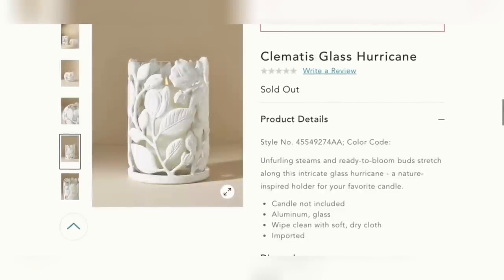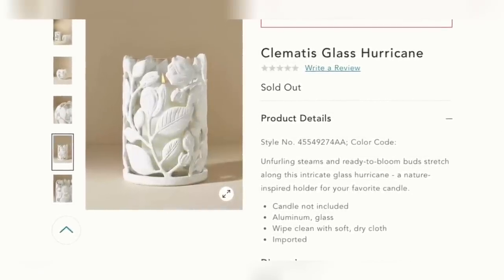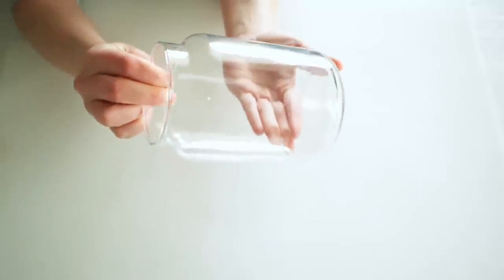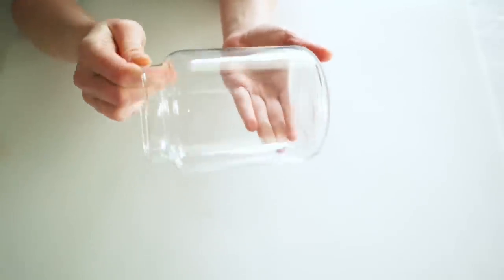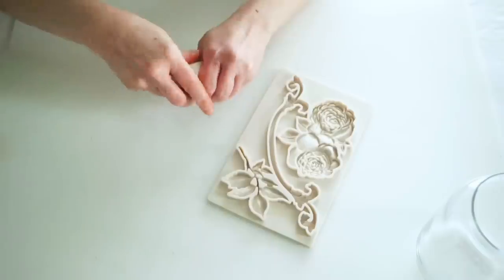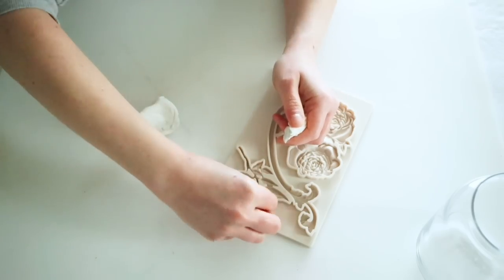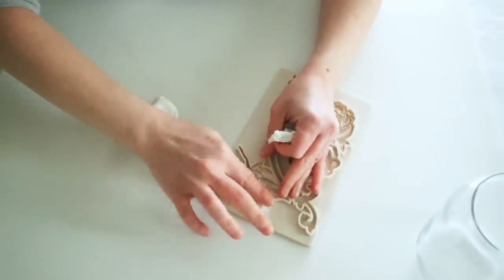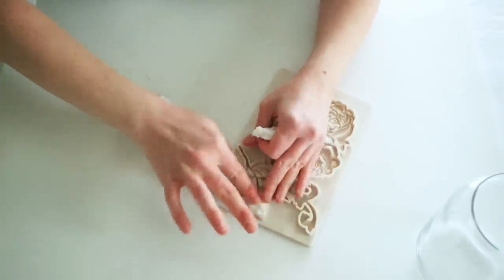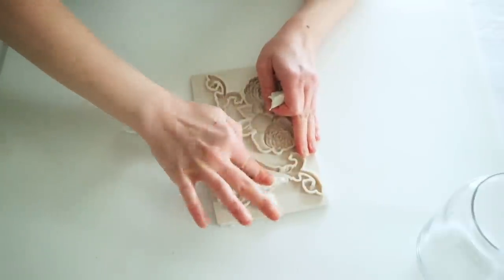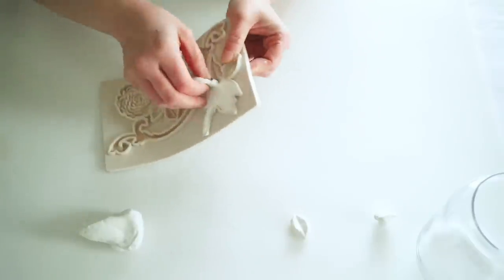This next project is inspired by this floral-covered glass hurricane vase from Anthropologie, and I already had a few glass vases or hurricanes on hand. So I just picked one that I like the shape of, and I'm gonna be using this little clay mold from Amazon that has flowers and leaves on it. But for this project, I'm just gonna be using the leaves and some of my air-dry clay, and then I'm just breaking off small pieces and making a bunch of little individual leaves until I felt like I had enough to go all the way around my vase.